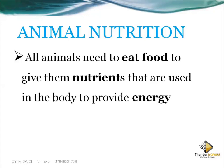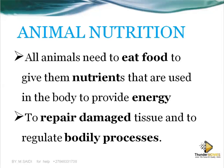All the processes happening in our body require energy, and this energy can only be obtained from the external environment. That's why we have animal nutrition — we need to obtain food from the external environment. Animal nutrition is also very important to repair damaged tissue and regulate body processes. When you eat, you obtain nutrients that help in repairing damaged cells and allow body processes to take place.